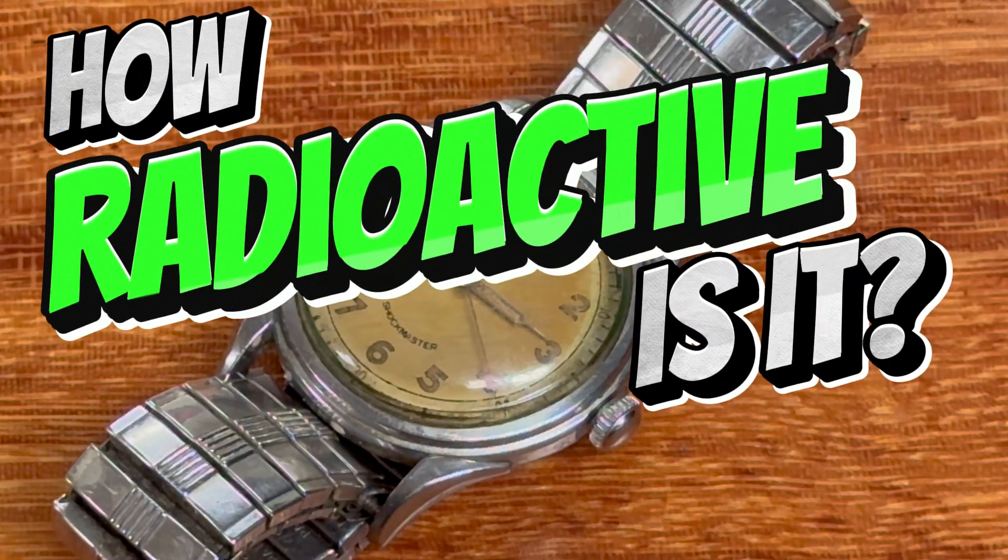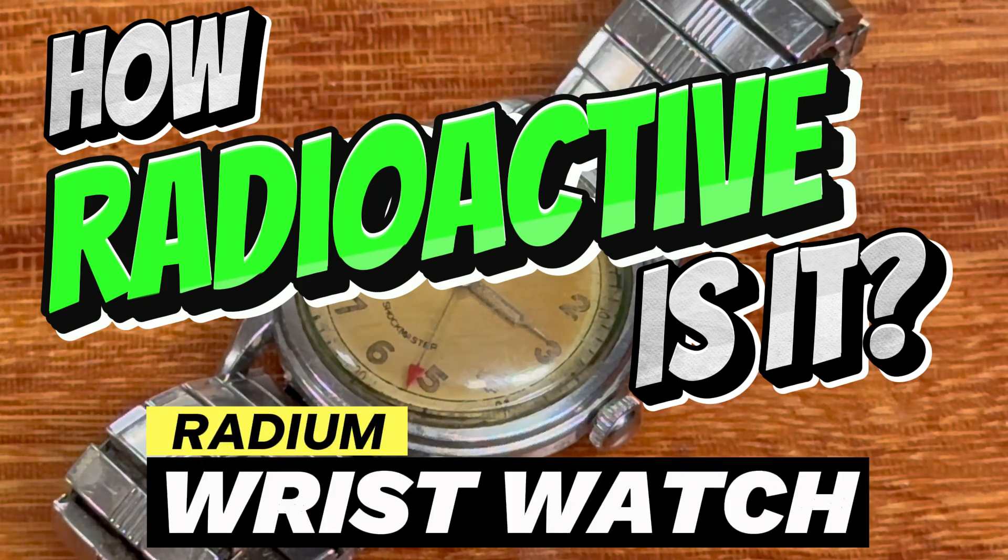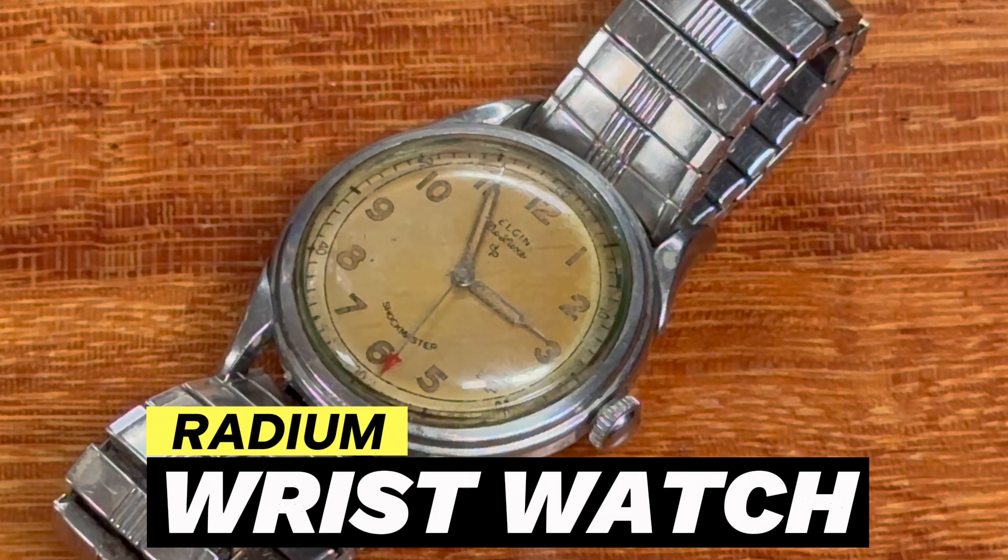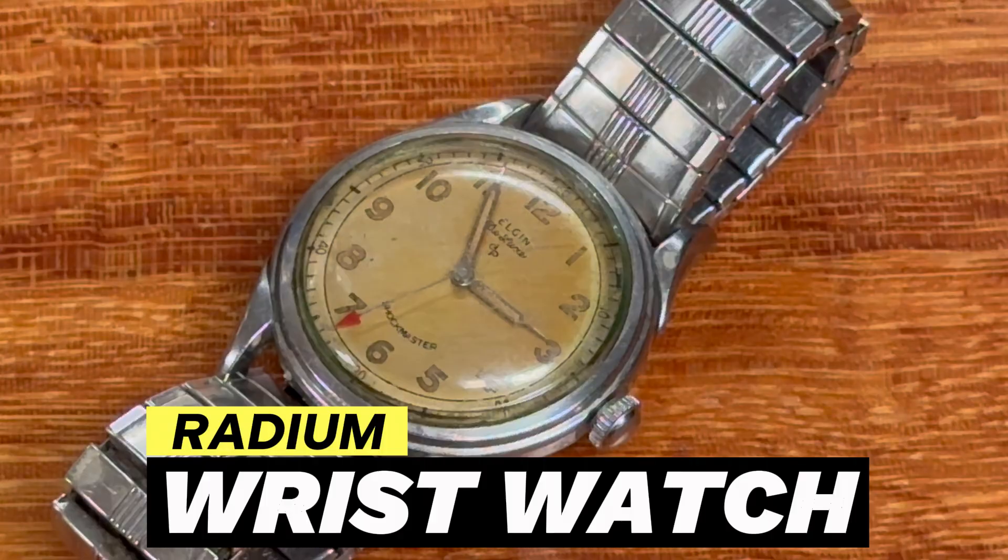In today's video, we ask the question, how radioactive is it? What we've got is a late 1950s, early 1960s Elgin Deluxe Shockmaster wristwatch with the classic glow-in-the-dark radium dial.